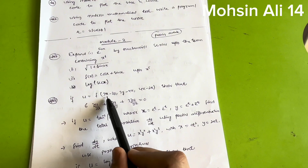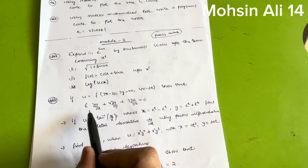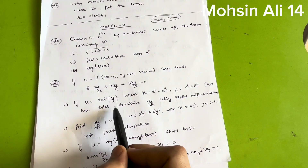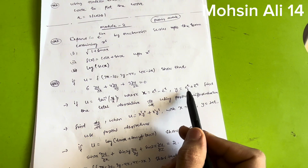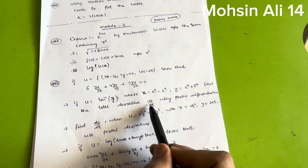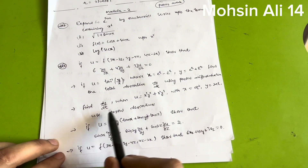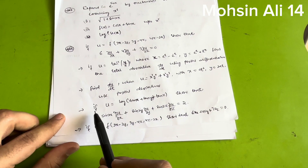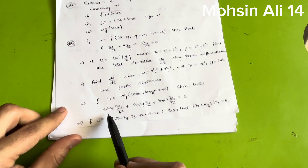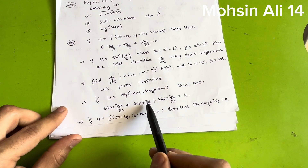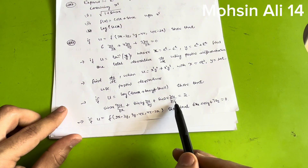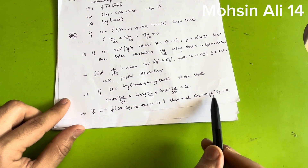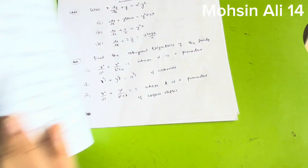For partial differentiation, practice: if u = f(2x−3y, 3y−4z, 4z−2x), show that 6·∂u/∂x + 4·∂u/∂y + 3·∂u/∂z = 0; if u = tan⁻¹(y/x) where x = eᵗ − e⁻ᵗ and y = eᵗ + e⁻ᵗ, find the total derivative du/dt; find du/dt when u = x³y² + x²y³ with x = at² and y = 2at using partial derivatives; and if u = log(x¹⁰ + y¹⁰ + z¹⁰), show that sin(2x)·∂u/∂x + sin(2y)·∂u/∂y + sin(2z)·∂u/∂z = 2.